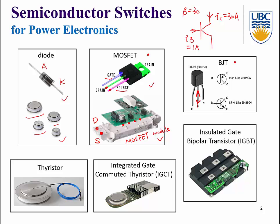This is why BJT is not widely used for high power applications, while MOSFET is widely used. However, BJT does have one advantage: it has less on-state resistance when conducting compared with MOSFET. This is an advantage of BJT.